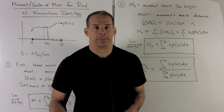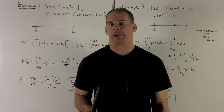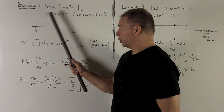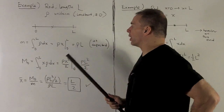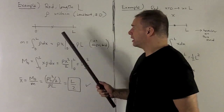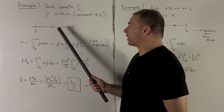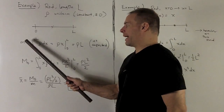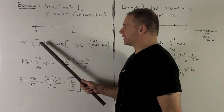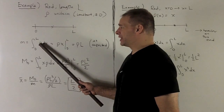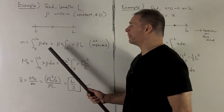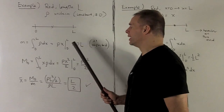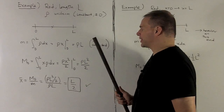Let's look at some examples. We should verify what we already know to be true. We'll start with a rod of length L with uniform density — constant and non-zero — and we expect the center of mass to wind up dead center at L/2. The mass is the definite integral from 0 to L of ρ dx. Density is constant, so it pulls out in front, and we're left with the integral of dx, which gives x evaluated at L and 0.